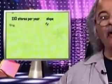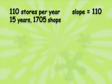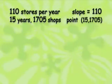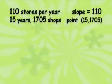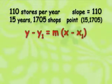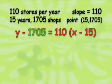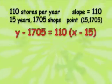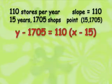Using this information, we can write an equation that represents the company's growth. The information we have tells us the rate of change of the size of the company, namely 110 stores per year — that will be the slope of our equation. The information about the size of the company in 2005 is a single point: 15, 1705. Notice we don't use 2005, but instead we use 15 for the number of years after 1990. Since we know the slope and a point, we can substitute into the point-slope form. M is 110, X1 is 15, and Y1 is 1,705. So our equation in point-slope form is Y minus 1,705 equals 110 times X minus 15.